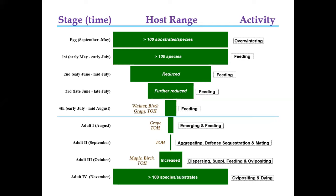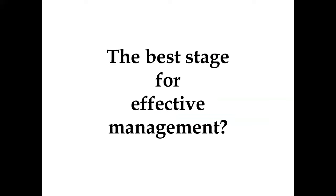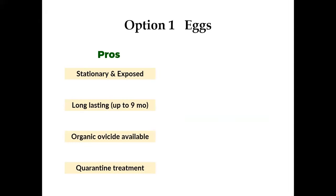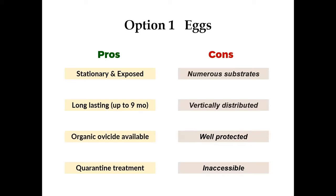Walnut is an important host for the fourth instar but not so much for adults. Maples are more of an adult stage host. I divide the adult stage into four different stages. The question is: what's the best stage for effective management? Let's look at the different scenarios. For eggs — the good news is they are stationary and exposed, they can last up to nine months, and as Phil mentioned, there's a very good organic option available.